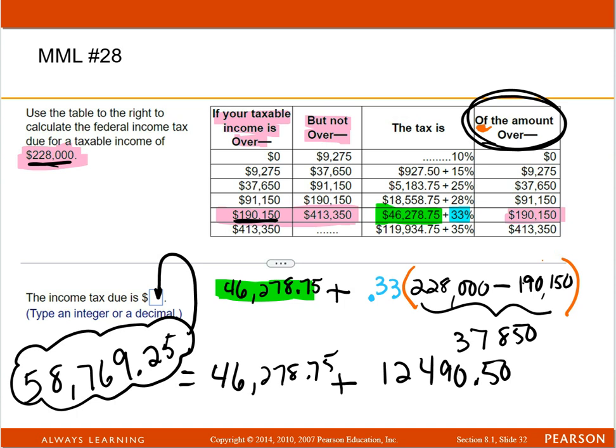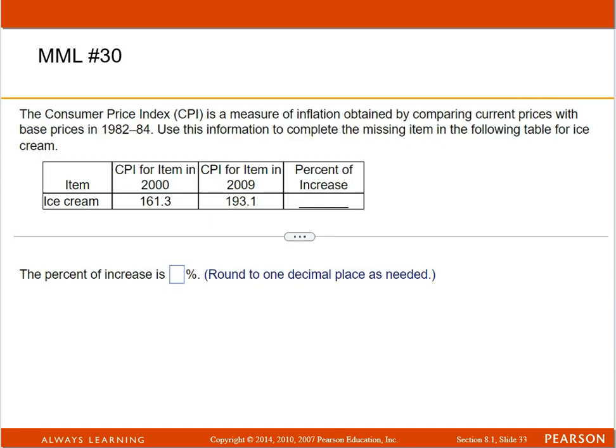And then I just have one more problem, so I'm going to do them on the same video. Consumer Price Index is a measure of inflation obtained by comparing current prices with base prices in the years 1982 to 84. Use this information to complete the missing item in the following table for ice cream. Okay, they want to know what is the percent of increase. So you're going to be using the formula that says percent of increase is going to equal the new minus the old, divided by the old.